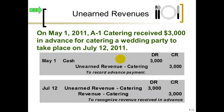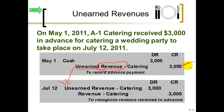Unearned revenue is not a revenue account — it's a liability account. On May 1st, A1 Catering receives $3,000 in advance for a wedding party in July. Journal entry: debit cash, credit unearned revenue (a liability) because the money hasn't been earned yet. When the work is done on July 12th, debit unearned revenue to reduce the liability and credit revenue. Don't be misled by the revenue name — unearned revenue is a liability, increased with a credit and reduced with a debit.